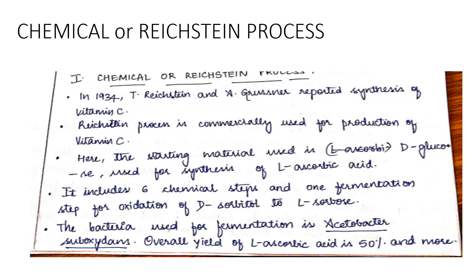Chemical process also involves one microorganism - the Reichstein process. He reported the synthesis of vitamin C. Commercially it is used for the production of vitamin C. Starting material is D-glucose only.